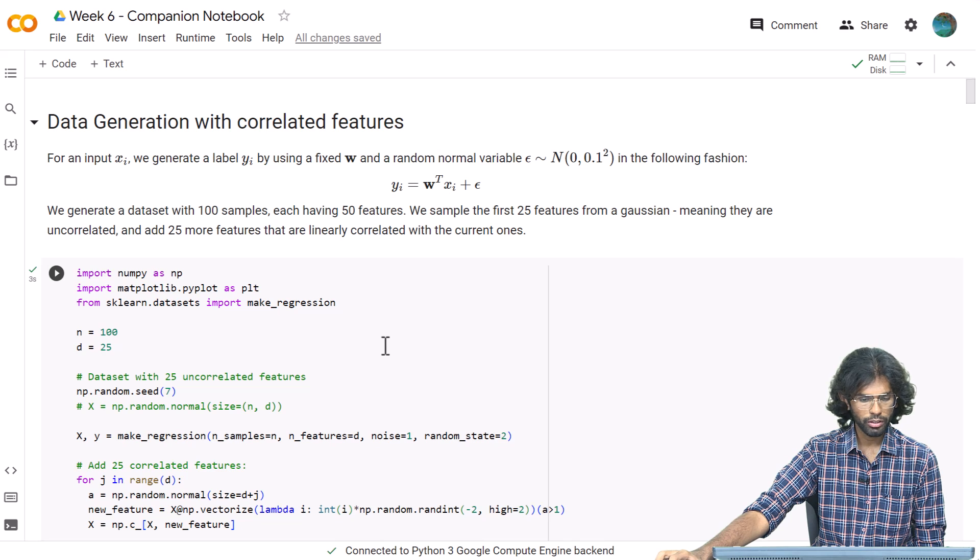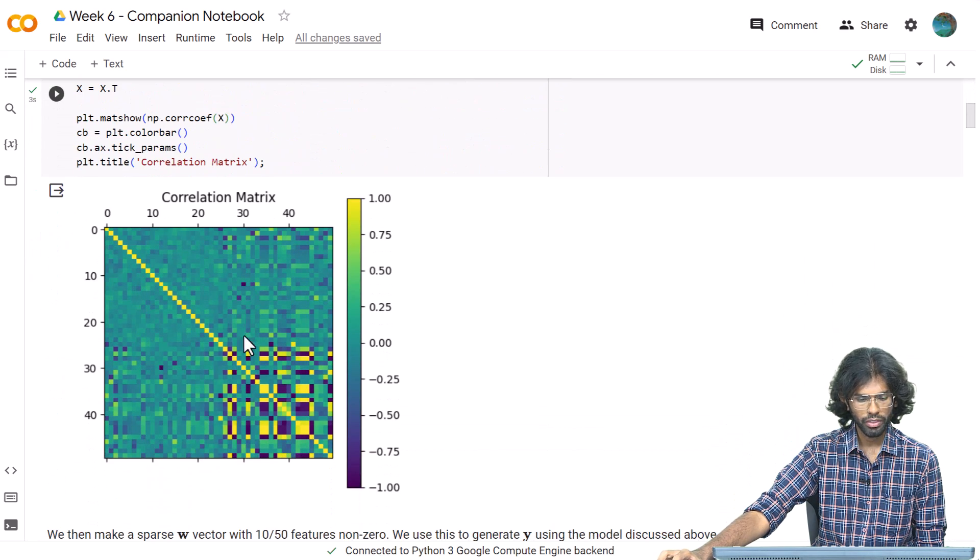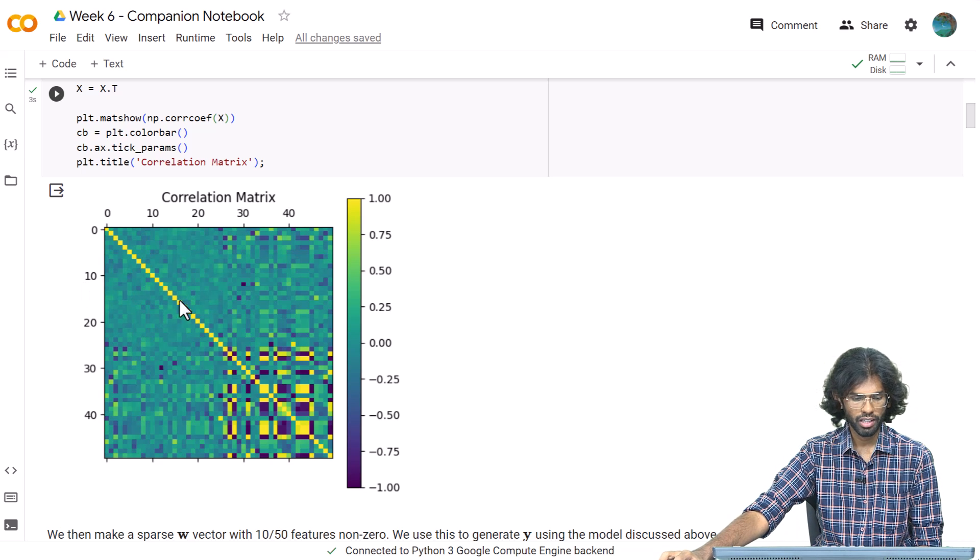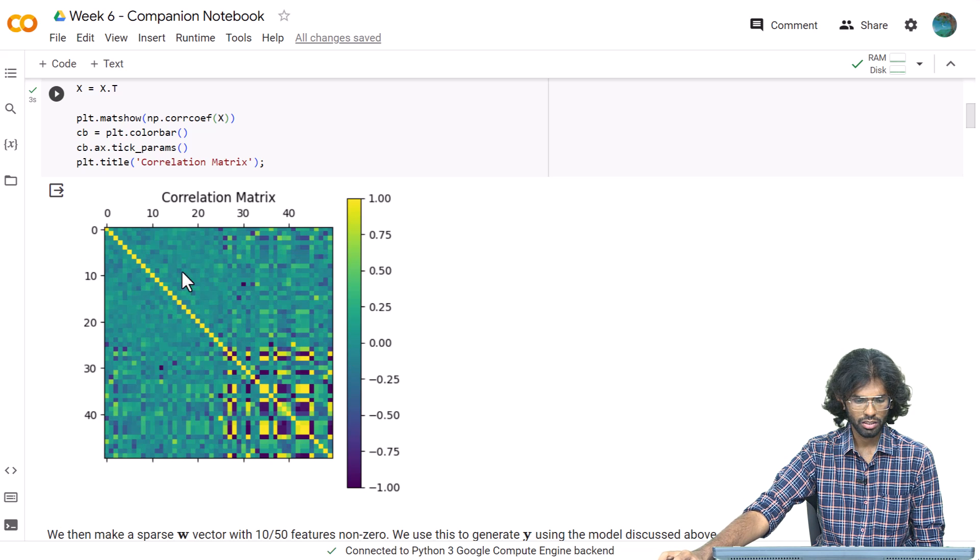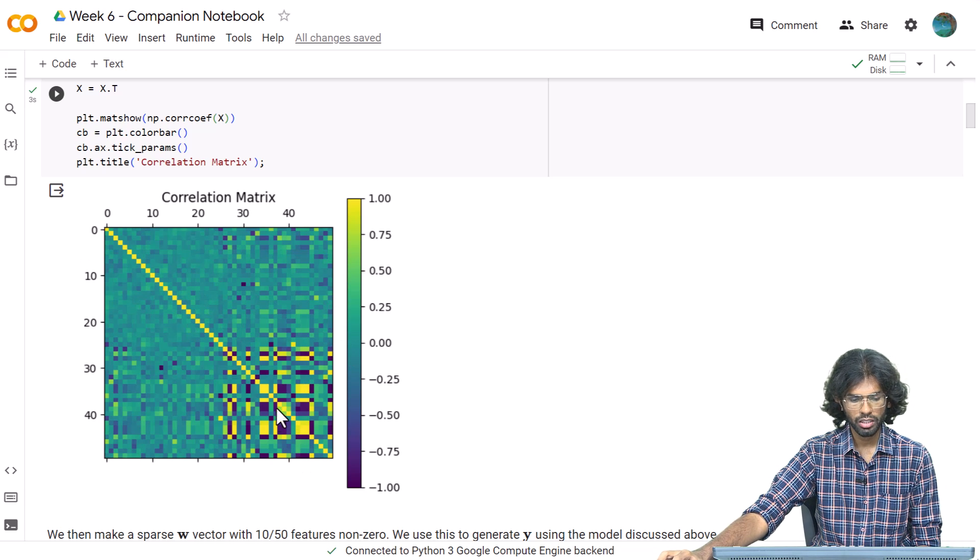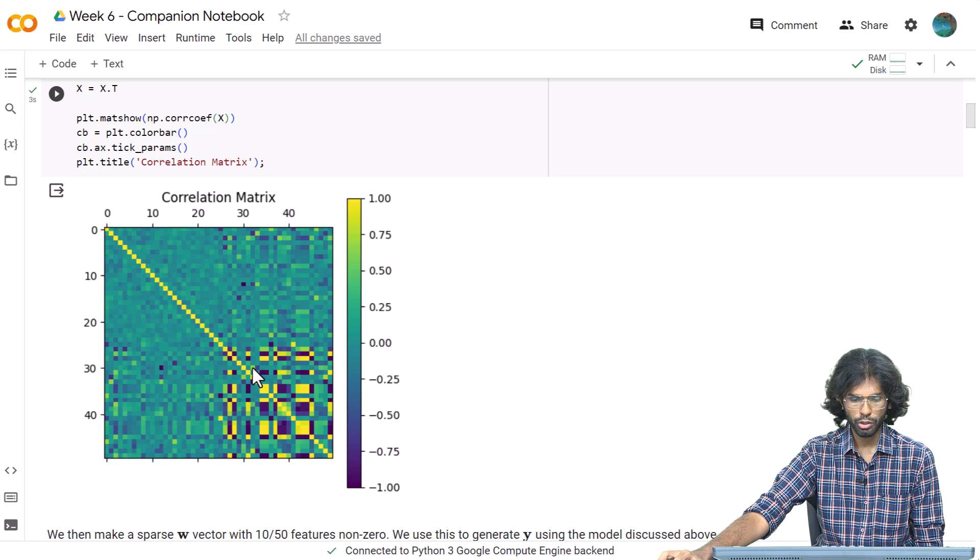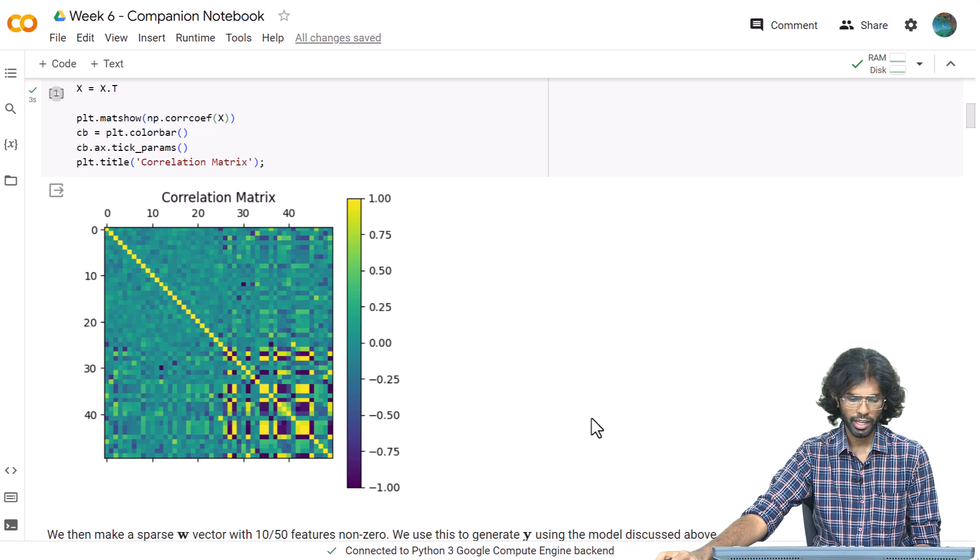I will not be going through this code that much; I invite you to do so. But if you see the correlation matrix for the dataset, you can see the first 25 are not that correlated, which corresponds to this green color indicating zero correlation. The yellow and purple colors indicate high positive or negative correlation.